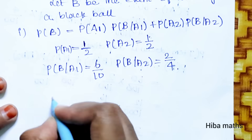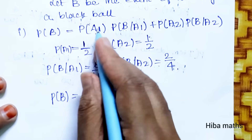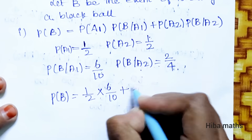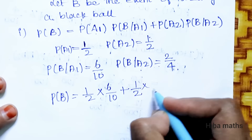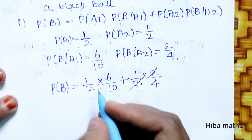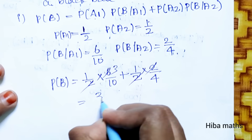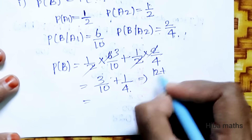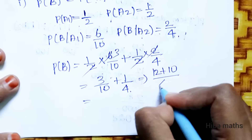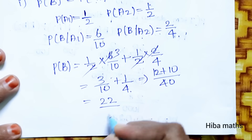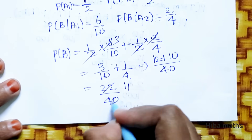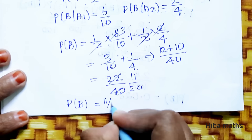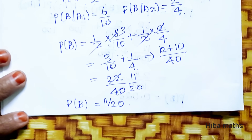Substituting: P(B) equals (1/2)(6/10) plus (1/2)(2/4), which simplifies to 3/10 plus 1/4. Finding common denominator: 12/40 plus 10/40 equals 22/40, which simplifies to 11/20. So P(B) equals 11/20.